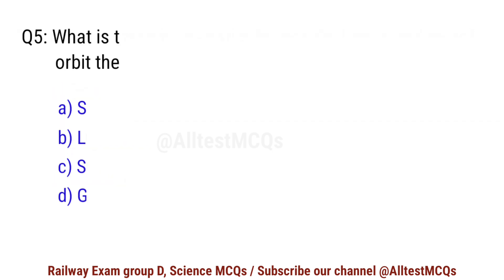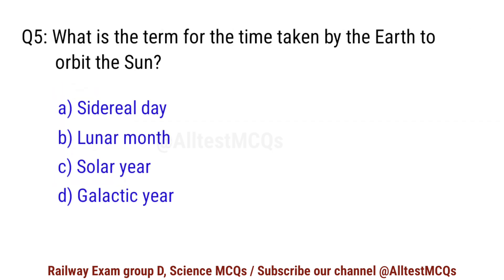Question No. 5. What is the term for the time taken by the Earth to orbit the Sun? Right option is C. Solar Year.